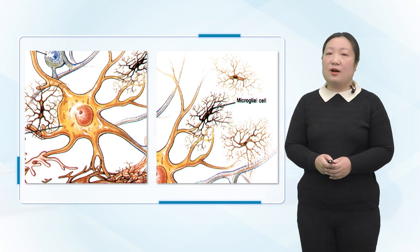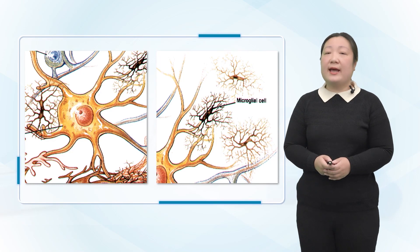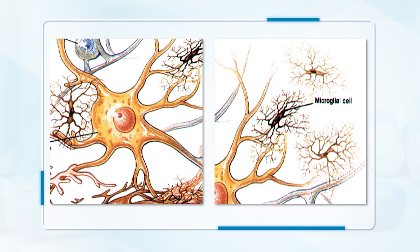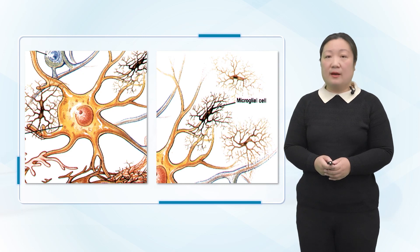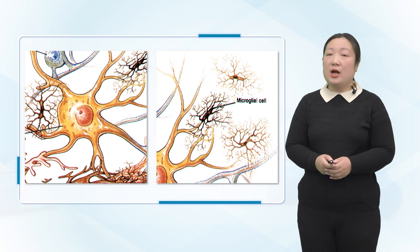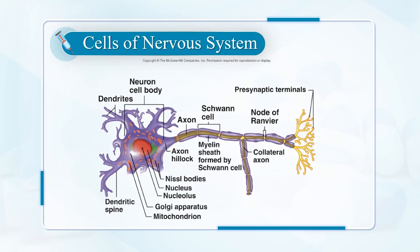The basic unit of the structure and function of the nervous system is the neuron. Its function is to generate excitement by receiving stimuli and to conduct excitement. Neurons contain the cell bodies and protrusions. The cell bodies are mainly concentrated in the gray matter of the brain and spinal cord. In the brain and spinal cord, where the cell bodies are dense, the color is dark, called gray matter. In the gray matter, neuron cell bodies with the same function are gathered together, regulating certain corresponding physiological functions of the human body. This part of the structure is called the nerve center.